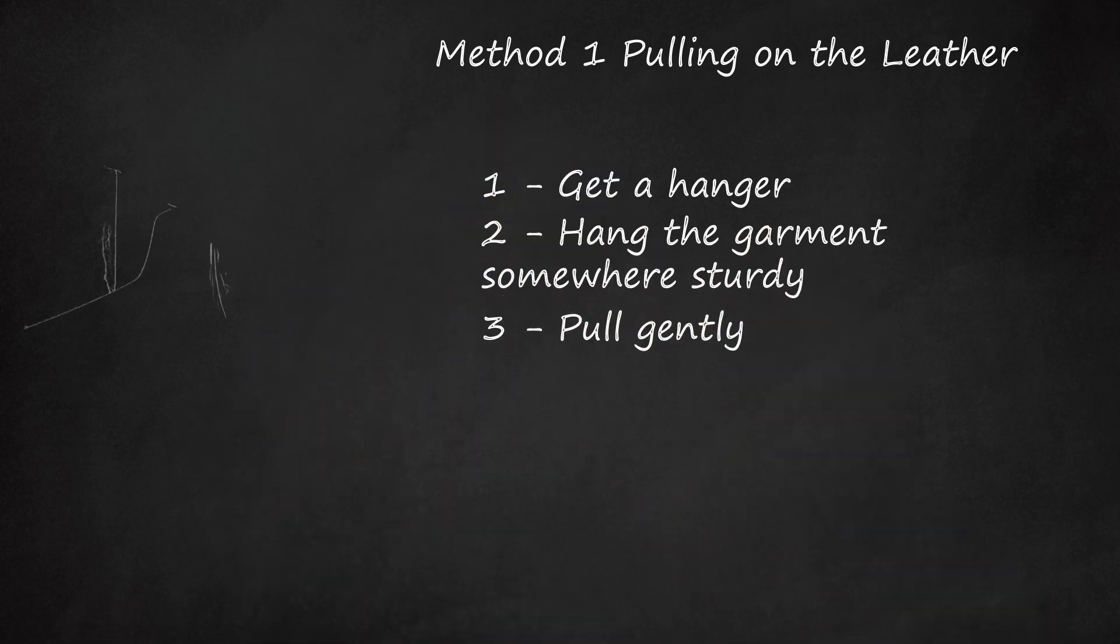Step 3: Pull Gently. Using your hands, pull lightly on the garment until the wrinkles relax. Pull in opposite directions at the same time, meaning that if you are working on a vertical wrinkle, you should grab it from both the top and the bottom of the wrinkle and pull gently in both directions.